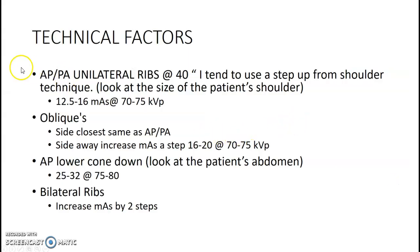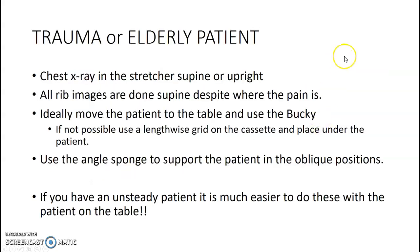For technical factors on AP and PA ribs, I tend to use a step up from what I'd use on a shoulder — if 8 mAs on a shoulder, maybe 10 on ribs; around 10, 12, or 16 mAs; 70–75 kV. When doing an oblique that pulls the part away from the IR, increase MAs a step. For the lower cone-down, use abdomen technique. Bilateral ribs require stepping up a bit. For trauma or elderly patients, I always utilize my Bucky table — if I think they'll have trouble standing or risk motion, I put them on the table and use that triangle angle sponge.